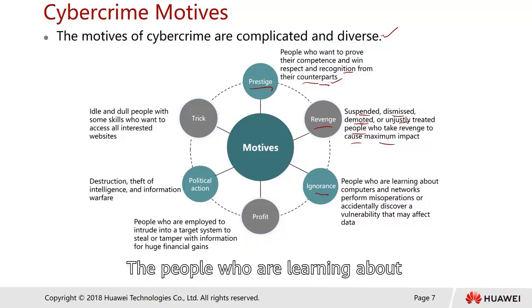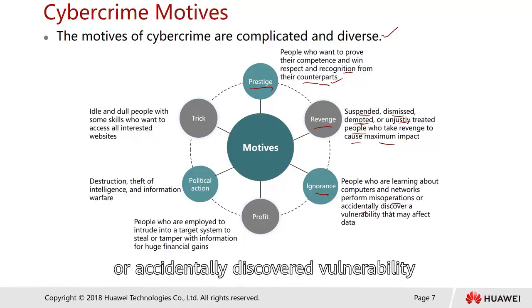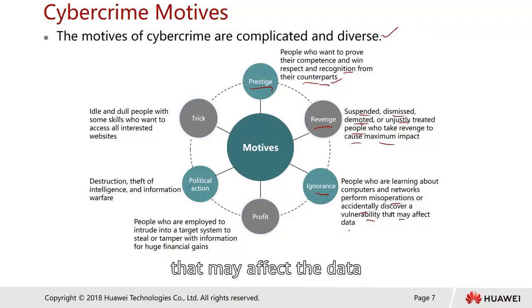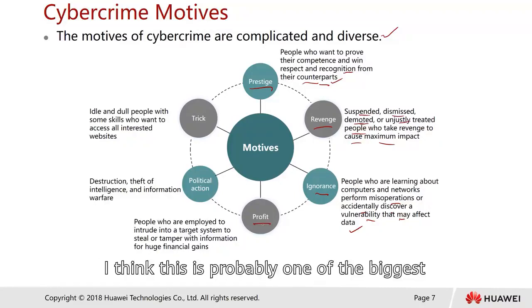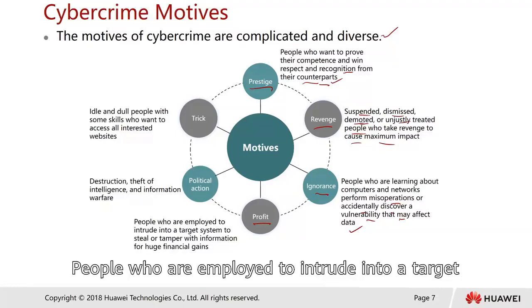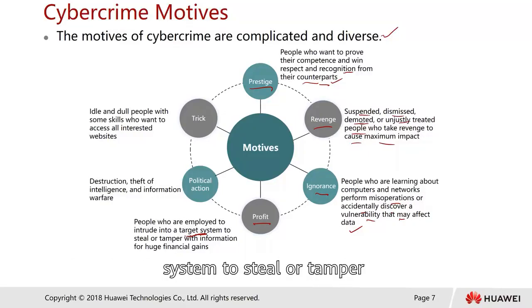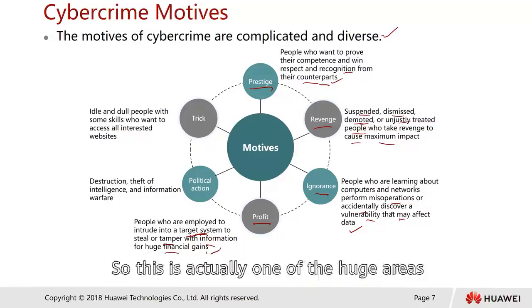Ignorance — people who are learning about computers and networks perform misoperations or accidentally discover vulnerabilities that may affect the data. Profit — this is probably one of the biggest motives for most people. People who are employed to intrude into target systems to tamper with information for huge financial gain.